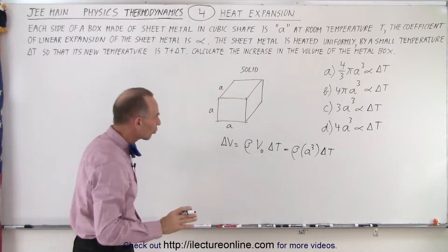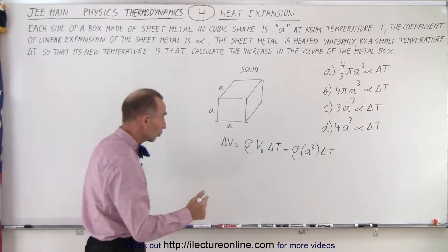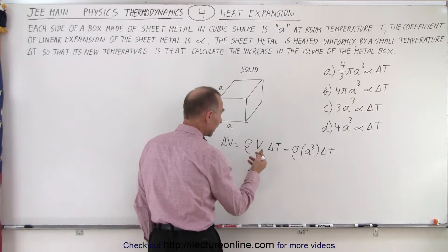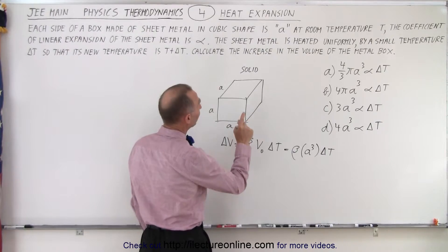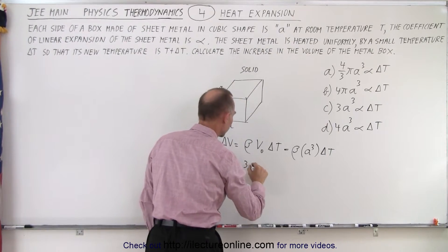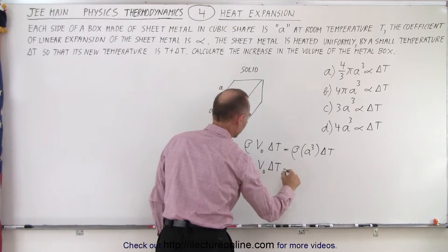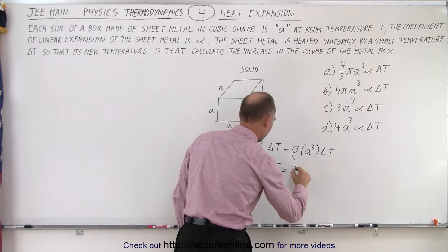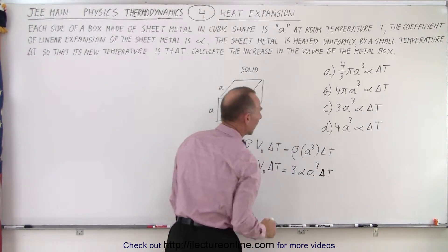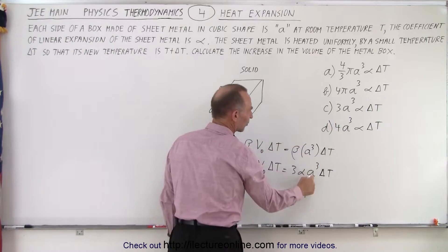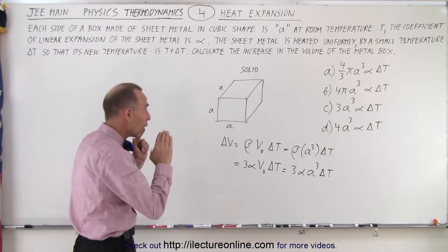But we're not dealing with a solid cube, we're dealing with a hollow cube. By the way, one more thing we should know: we can replace this. If only your linear expansion coefficient is given, which is the case here, then we can also write it as 3 times alpha times V initial times delta T, which is equal to 3 alpha times A cubed delta T. And notice, that's one of the answers, would be answer C. But is it also true if you have a hollow cube?